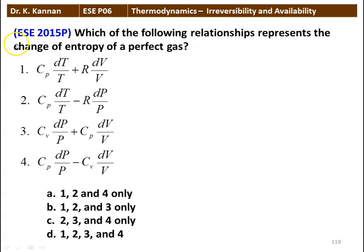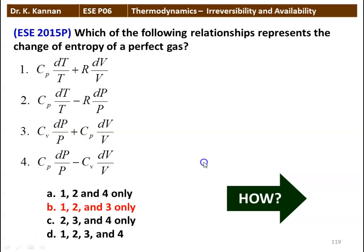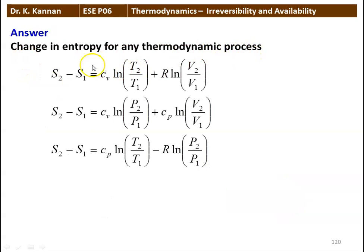The next question: which of the following relationships represent the change of entropy of a perfect gas? The four statements are: (1) Cp·dT/T + R·dV/V; (2) Cp·dT/T − R·dP/P; (3) Cv·dP/P + Cp·dV/V; (4) Cp·dP/P − Cv·dV/V. The correct statements are 1, 2, and 3. The entropy change expressions are: S2 − S1 = Cv·ln(T2/T1) + R·ln(V2/V1); S2 − S1 = Cv·ln(P2/P1) + Cp·ln(V2/V1); and S2 − S1 = Cp·ln(T2/T1) − R·ln(P2/P1). These are the three expressions to calculate entropy change for any thermodynamic process.